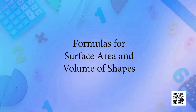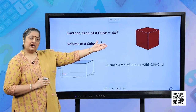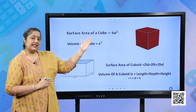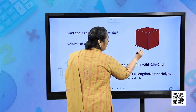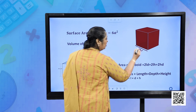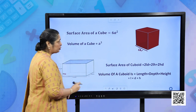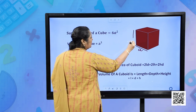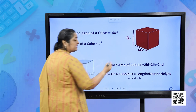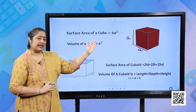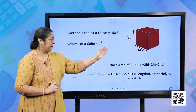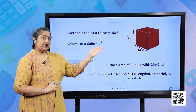Let us revise some formulas for surface areas and volumes of these shapes. The first one is a cube. Surface area of a cube is 6A², where A is any edge of the cube, and all edges are the same in a cube. Volume of the cube is A³, that is A into A into A.